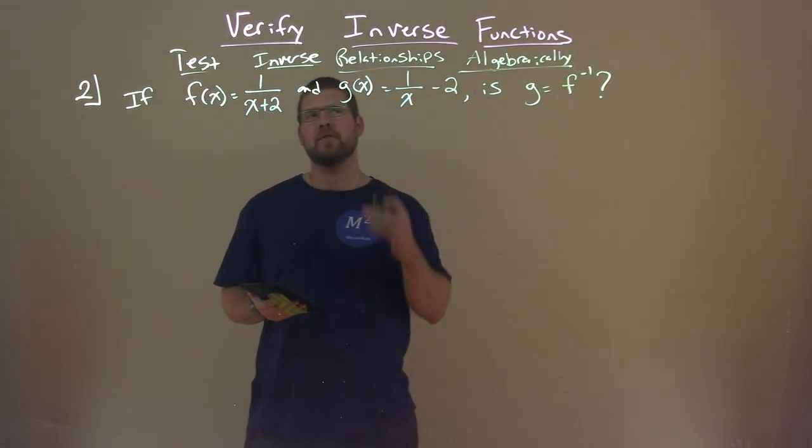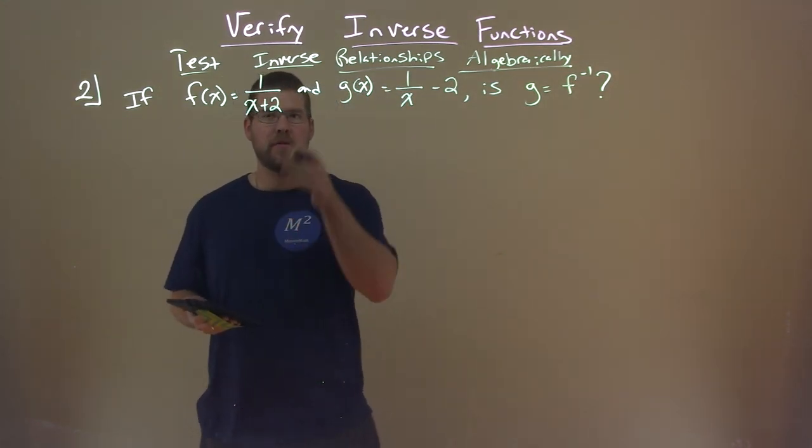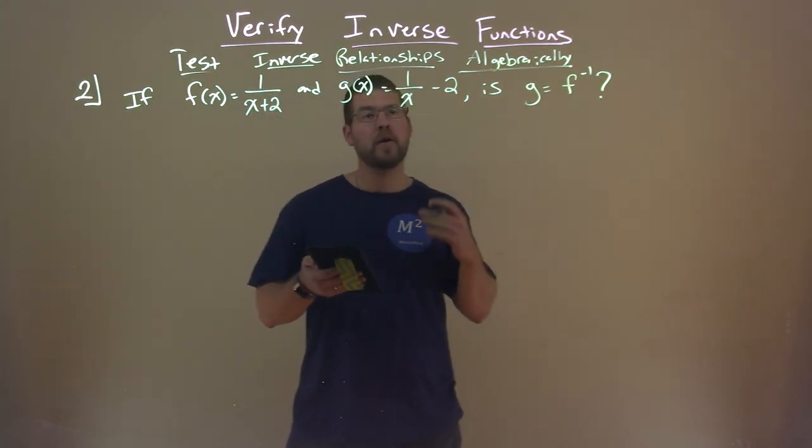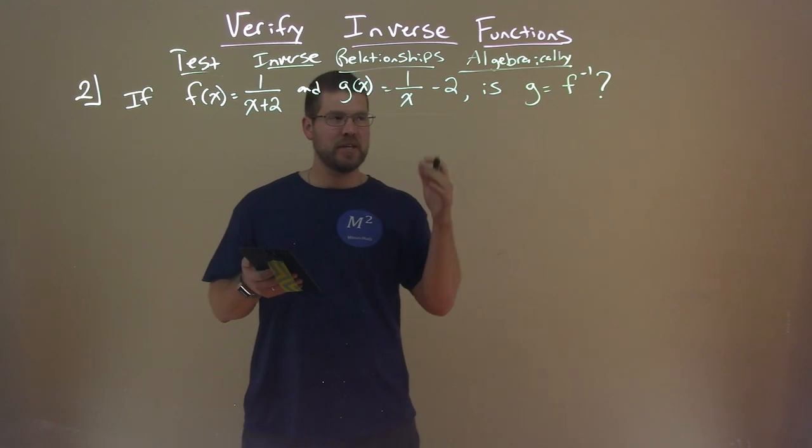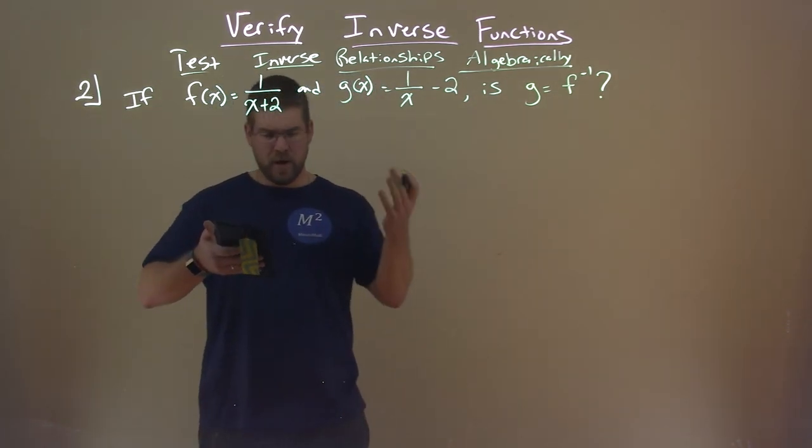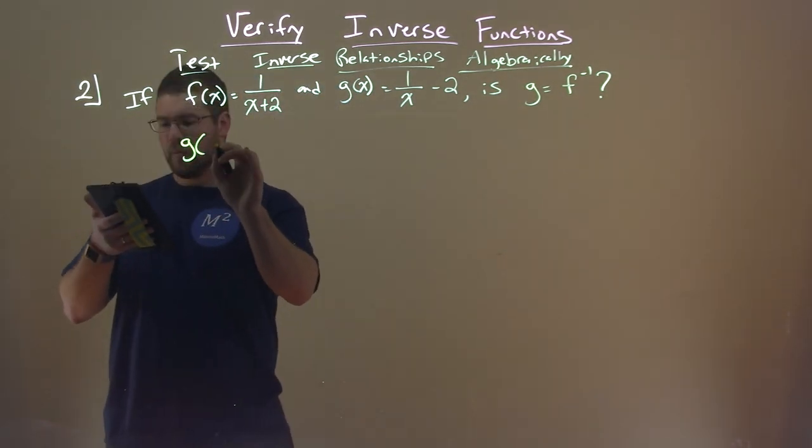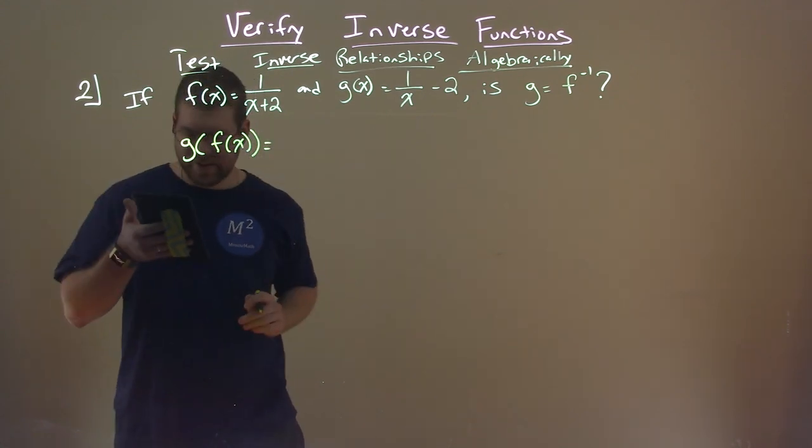So we want to test inverse relationships algebraically. We're given f of x equals 1 over x plus 2, and g of x equals 1 over x minus 2. We want to see, is g equal to f inverse? So we can test this by finding what is g of f of x.